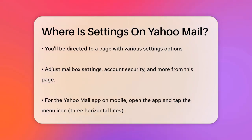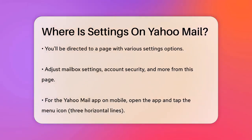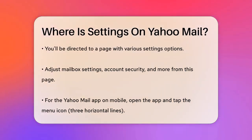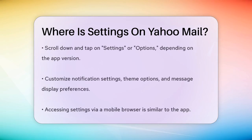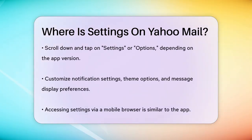If you're using the Yahoo Mail app on your mobile device, the process is a bit different. Open the Yahoo Mail app and tap on the menu icon in the upper right corner. This icon usually looks like three horizontal lines. Scroll down the menu and tap on Settings. In some versions of the app, this might be labeled as Options.